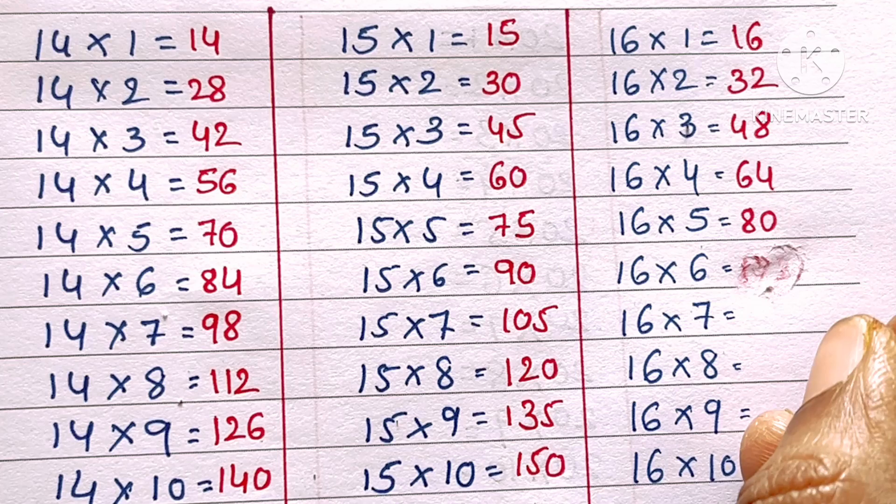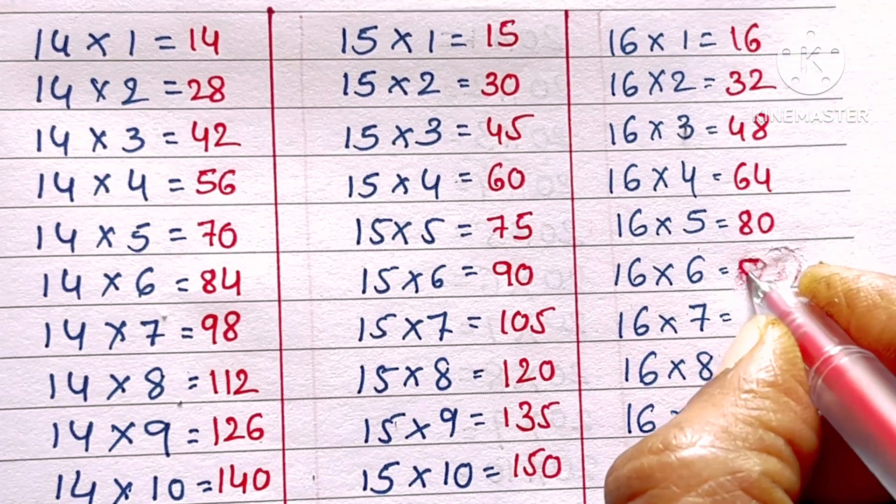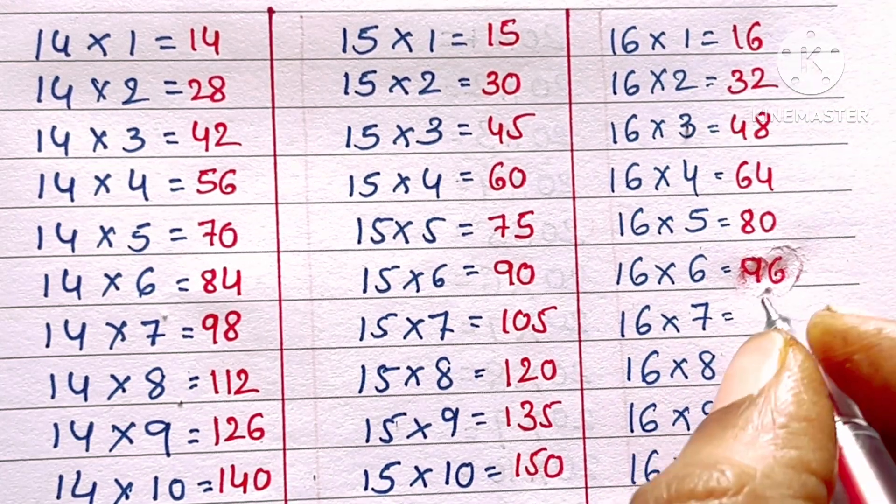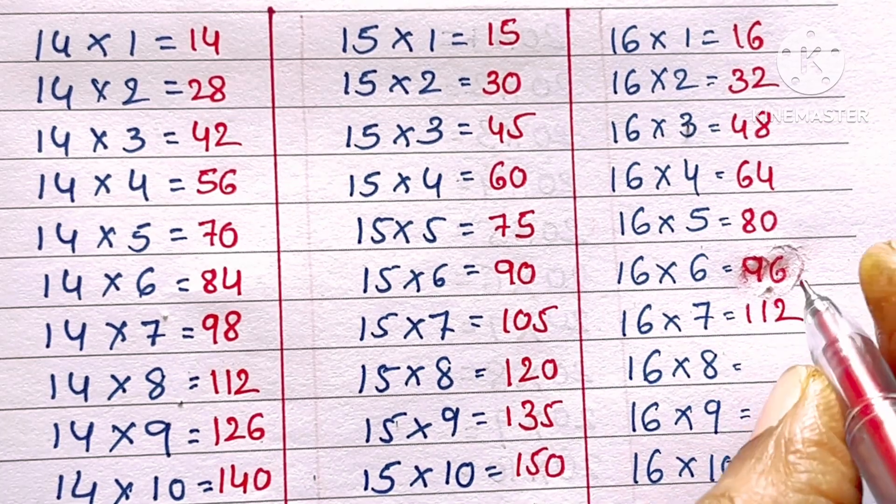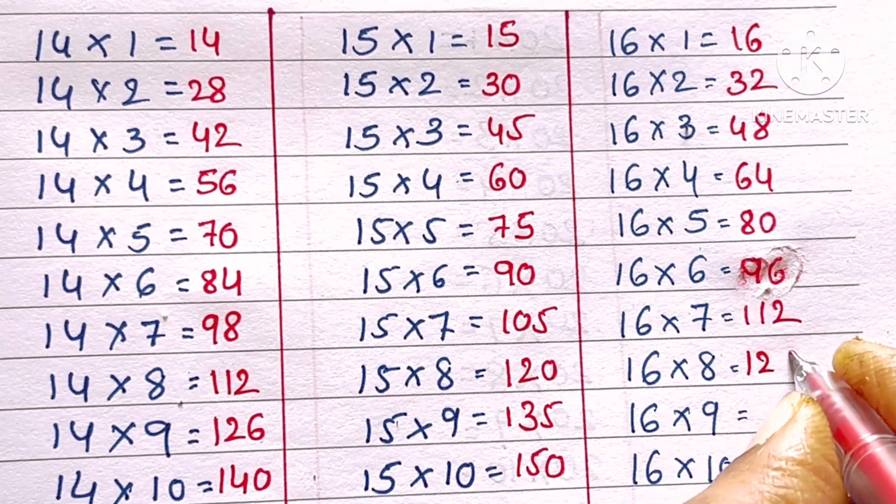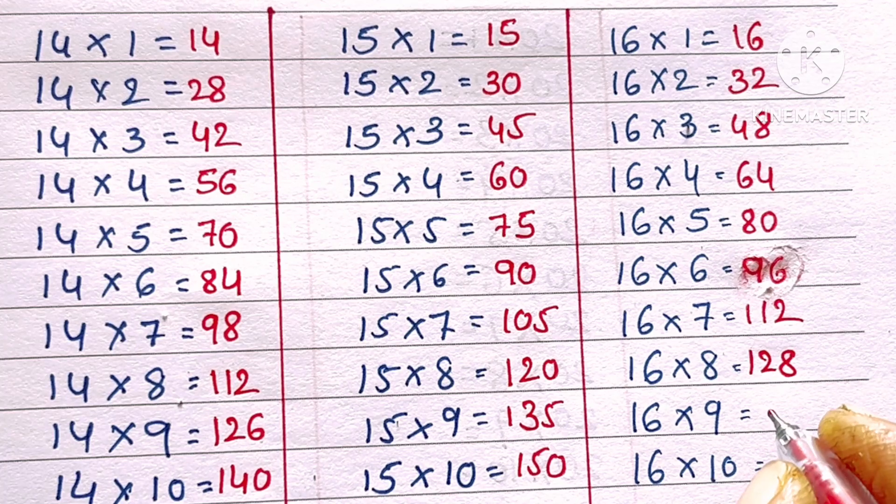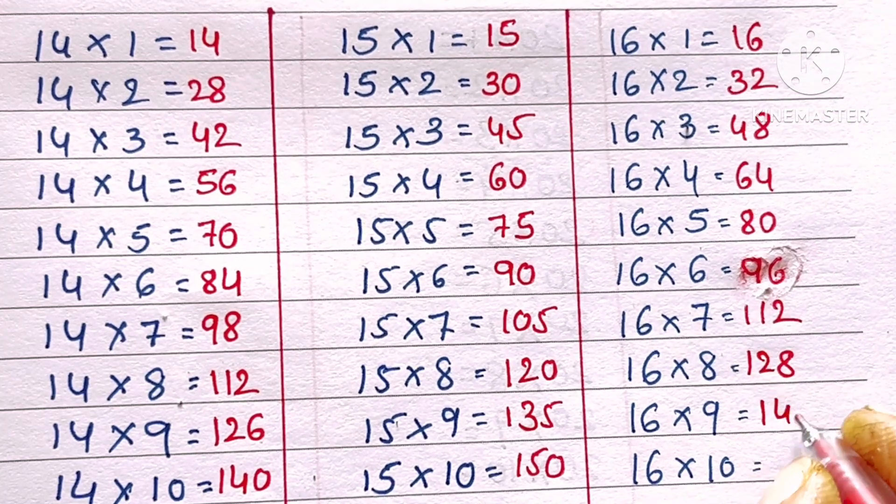16 sixes are 96, 16 sevens are 112, 16 eights are 128, 16 nines are 144.